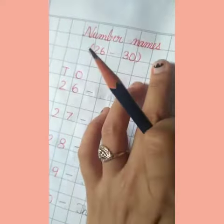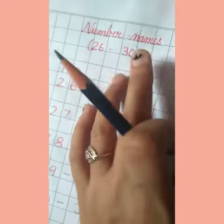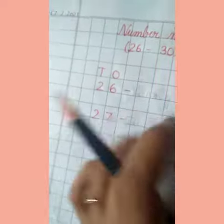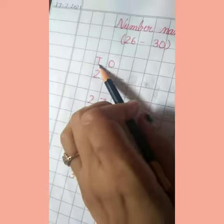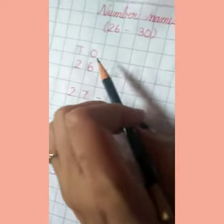Today we are writing the number names from 26 to 30. Start writing, put the date there and write all the numbers under the heading of T, O, Tens and Ones.